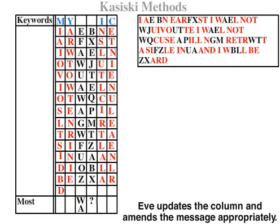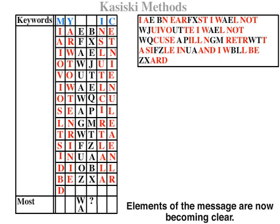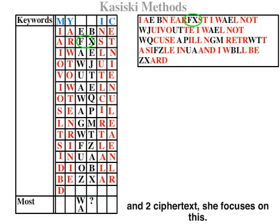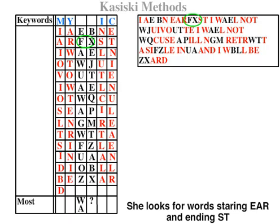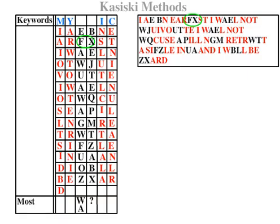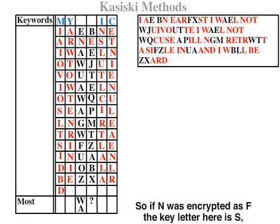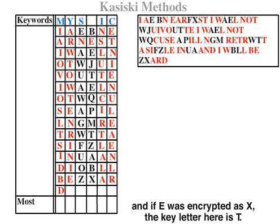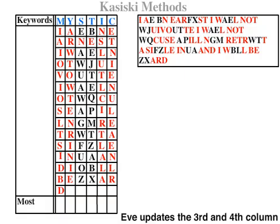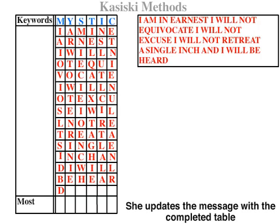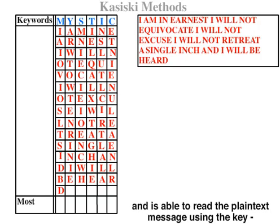Eve takes the column and amends the message. Elements of the message are now becoming clear. She notices a seven-letter word with five plaintext letters and two ciphertext characters. She looks for words starting E, A, R and ending S, T with two spaces in between. The only compatible word is 'earnest.' So if N was encrypted as F, the key letter is S; and if E was encrypted as X, the key letter is T. Eve updates the third and fourth columns and is able to decipher all the remaining ciphertext. She updates the message with the completed table and is able to read the plaintext message using the key 'mystic.'